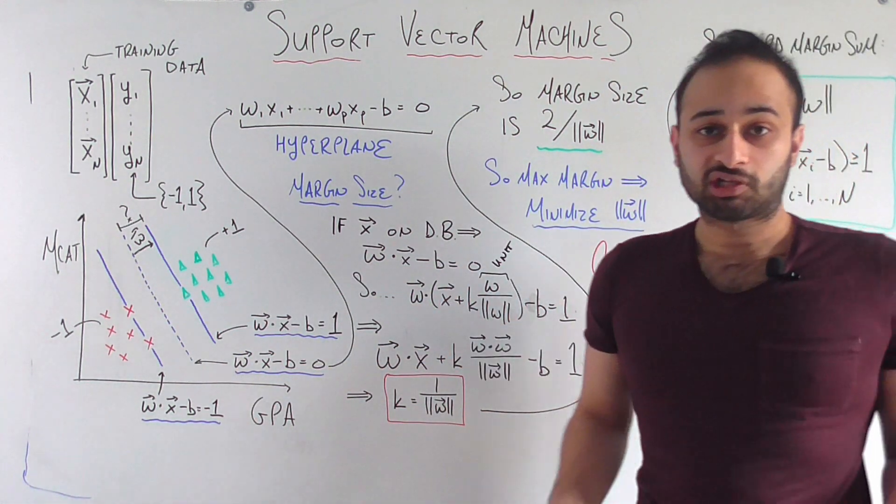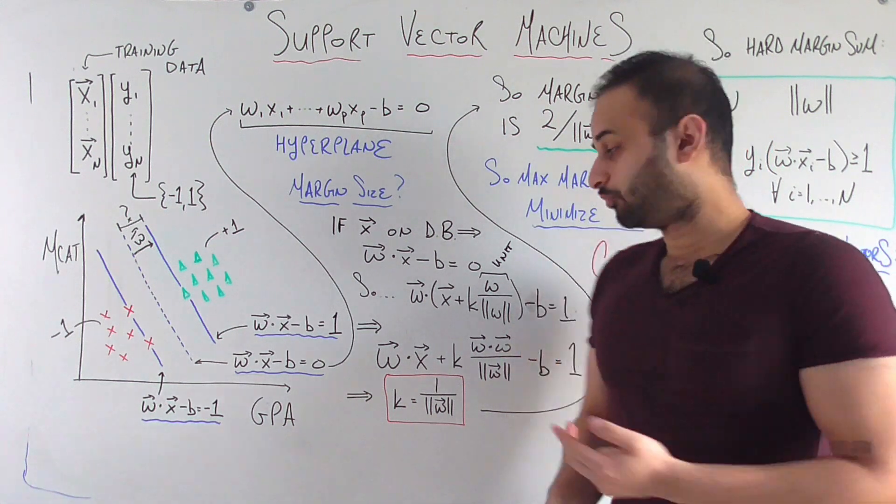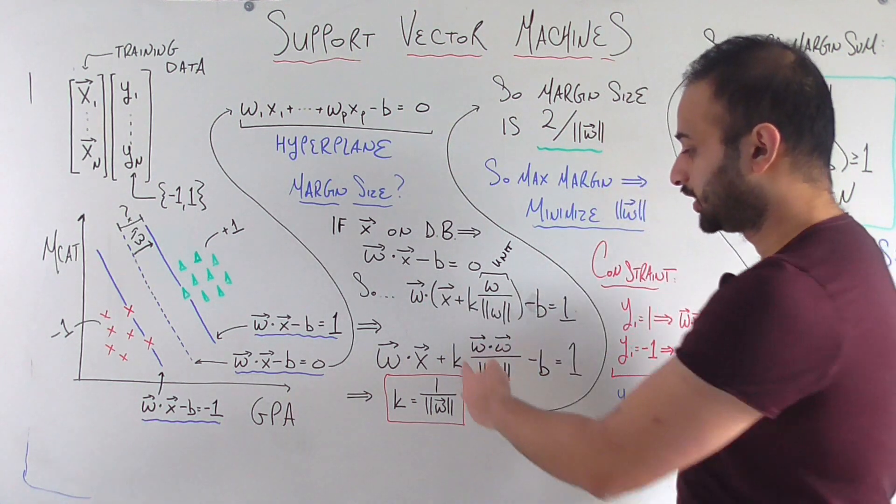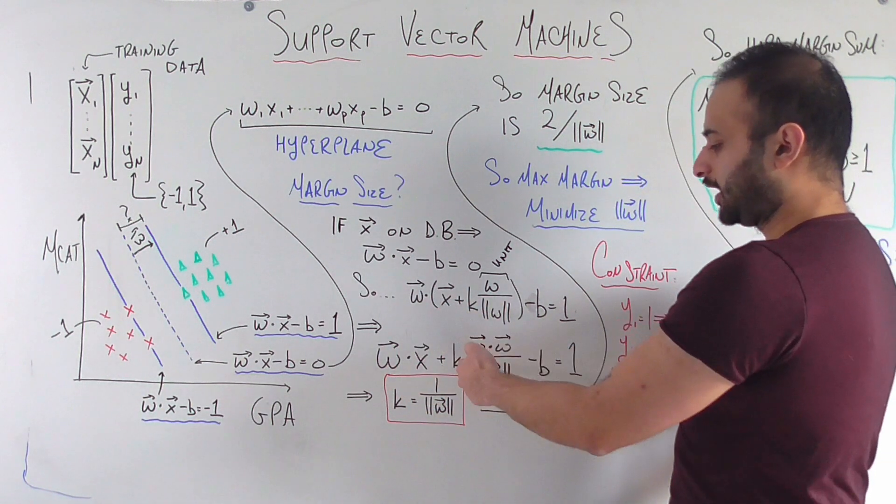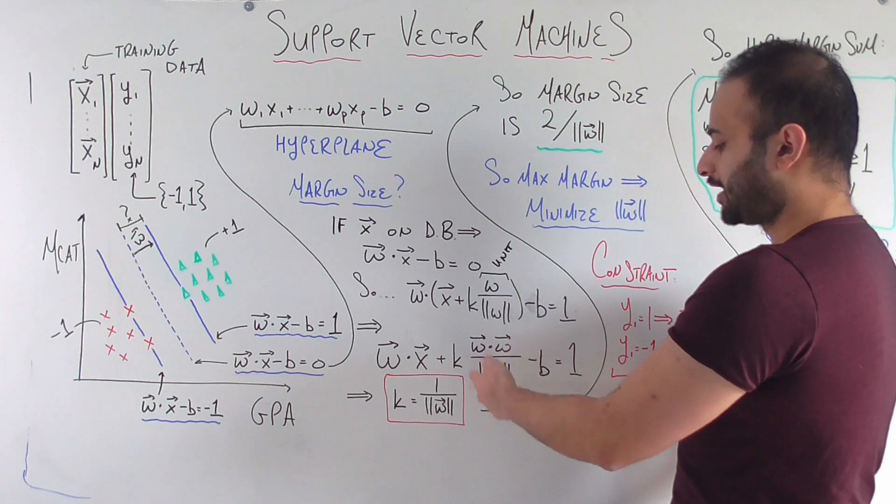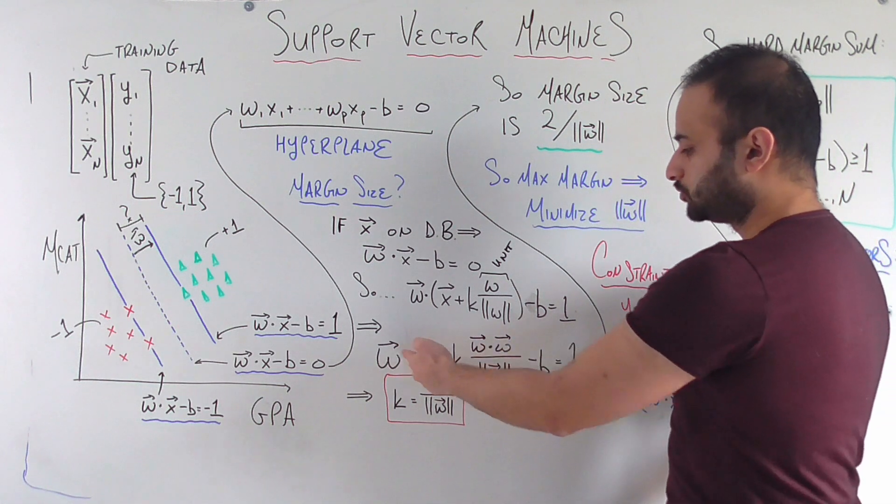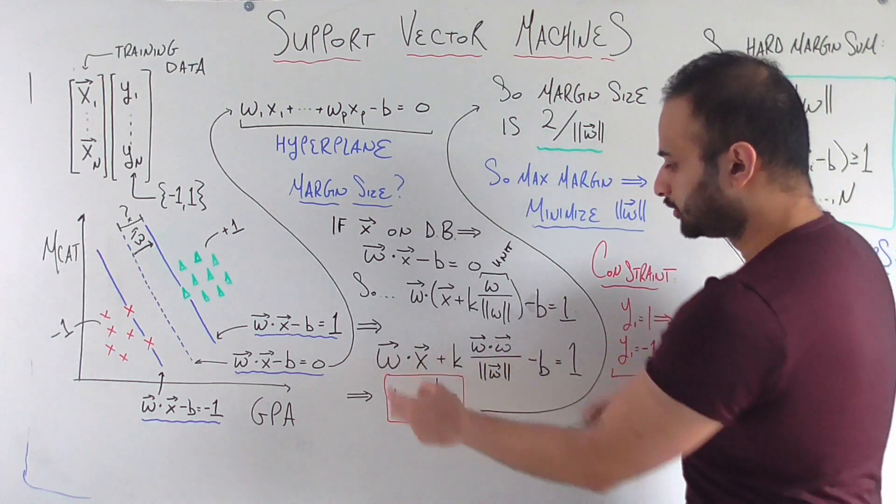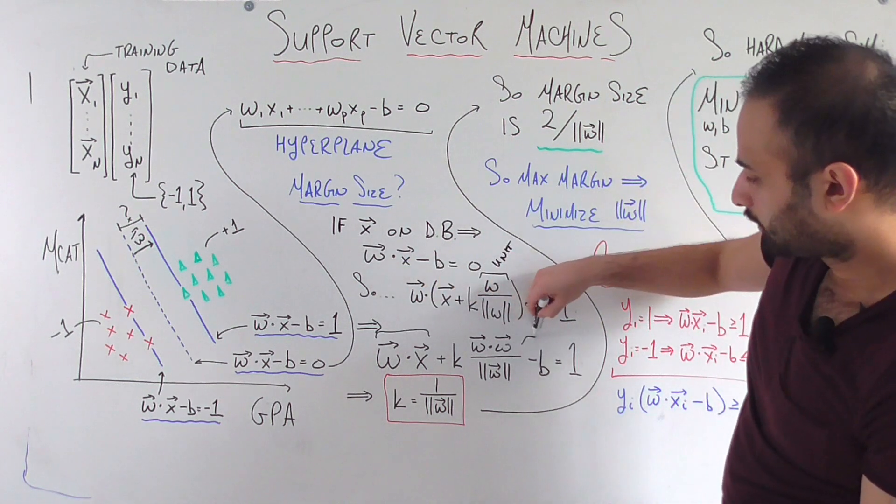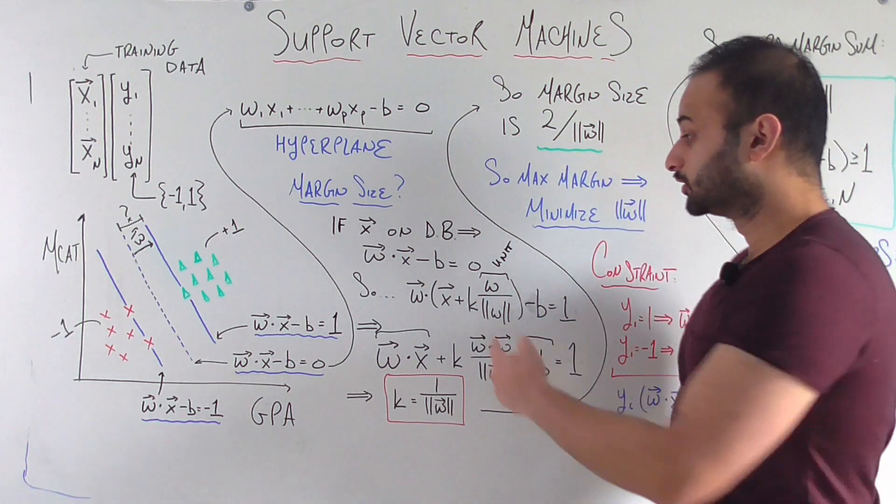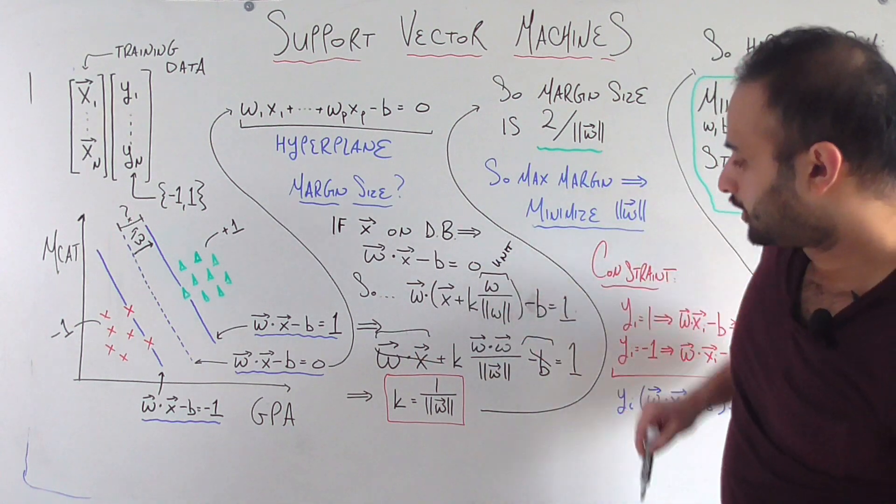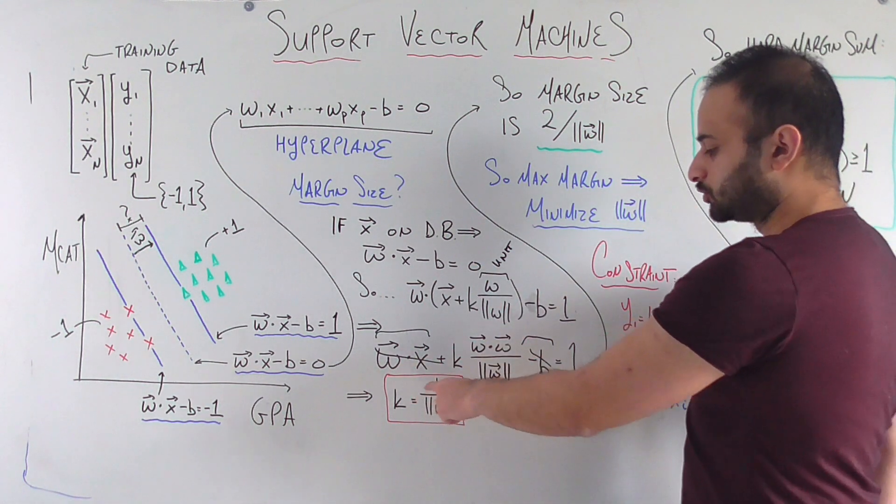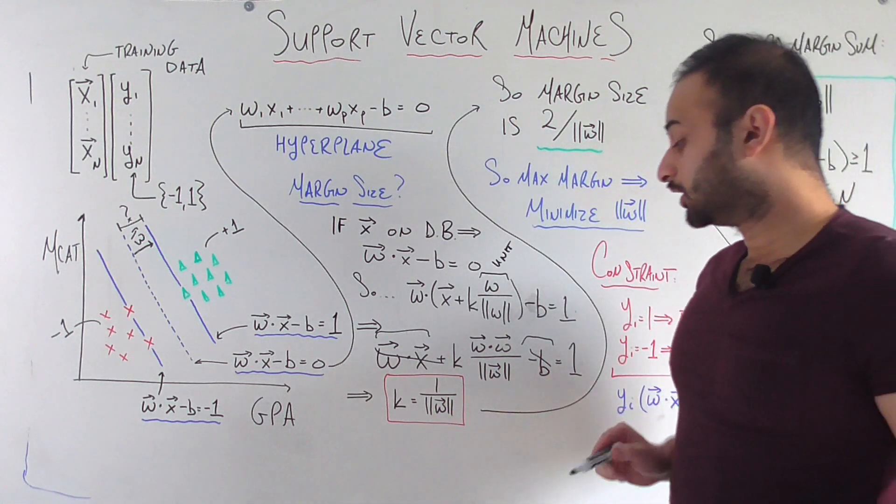Looks a little bit complicated, but once we break apart this term it becomes pretty obvious because we get w dot x, that's the first term here, plus k w dot w over magnitude of w. And this w dot x minus b, so this part and this part is what? We literally know that's equal to zero. So that goes away, this goes away, and we simplify and we get that k equals 1 over the magnitude of w.